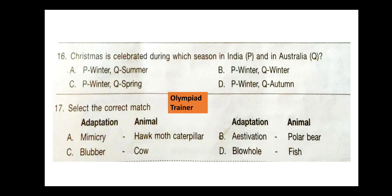Question 17. Select the correct match regarding adaptation and animals. The answer is option A — mimicry. The animals are hawk, moth, and caterpillar. Animals mimic other animals, which are called models, to fool their predators. Hawk, moth, and caterpillar do this, so this is the correct option.